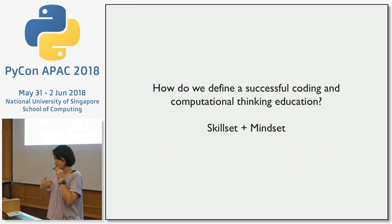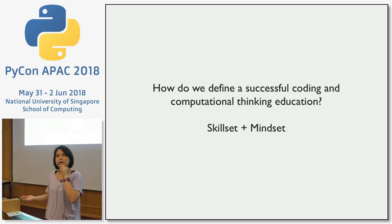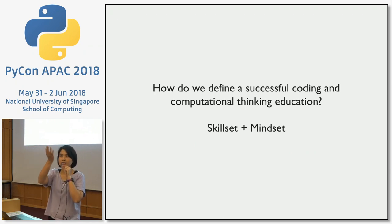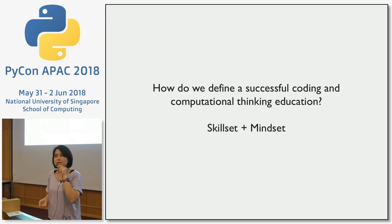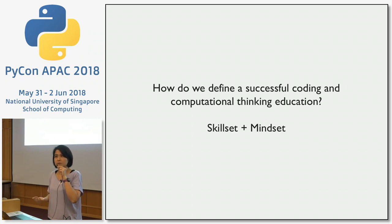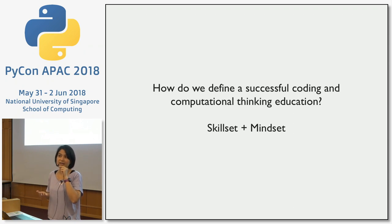So how do we define a successful coding and computational thinking education? What I mentioned — the flow of code, make, etc. — that was a skill set. I'd like to propose that, other than skill set, the mindset must also be involved. A successful coding and computational thinking education would have to include expansion of the mindset as well.